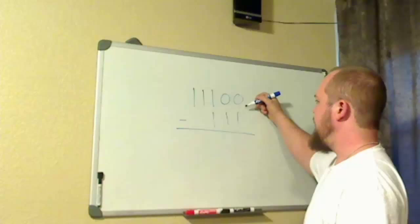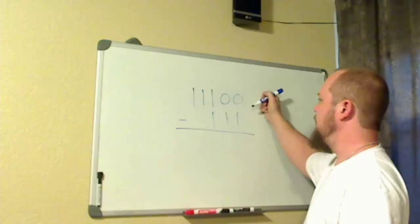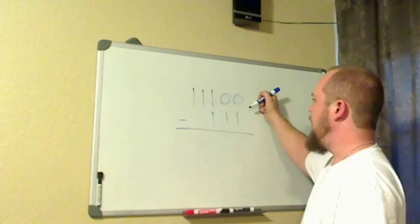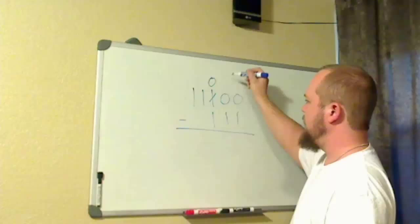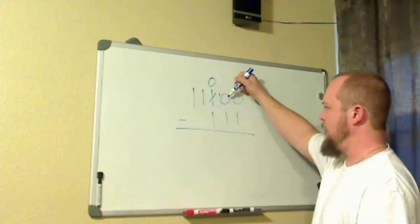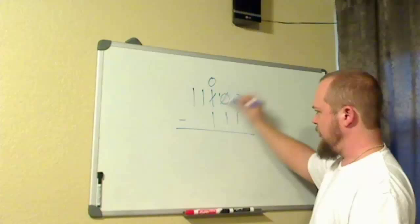1 minus 0, you cannot take 1 from 0. Therefore, as we do in decimal, we have to borrow. Instead of borrowing a 10, we will be borrowing 2. And we cannot borrow from this 0, so we must continue to the next digit or bit. This bit we can borrow from. So we will take this 1 and turn it into a 0. We will bring down a small 1 right next to this, making this a 1, 0, which is 2.